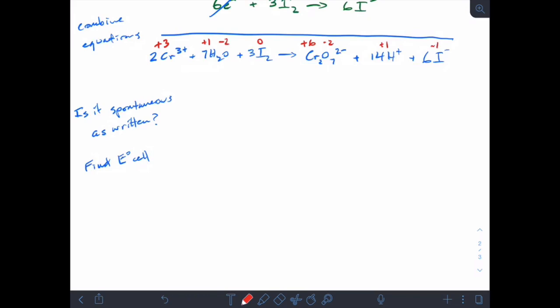So looking in here, we see that for chromium, it's going from a plus three to a plus six. So that means that it's oxidized, which makes it the anode. Remember that anode and oxidation both begin with vowels, so they go together.